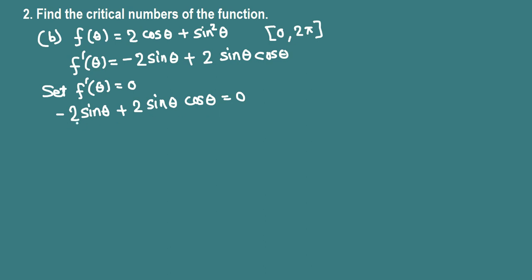Negative is already there, let's pull that out as well. Nothing left means 1. Negative 2 sine theta out, 1 minus cosine theta equals 0. So using zero factor property, if either 1 minus cosine theta equals 0 or negative 2 sine theta equals 0.